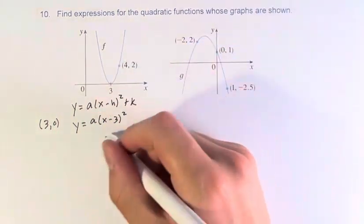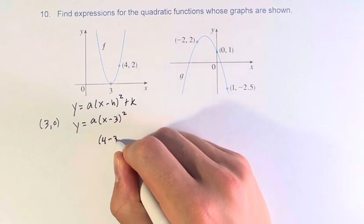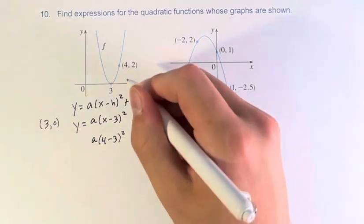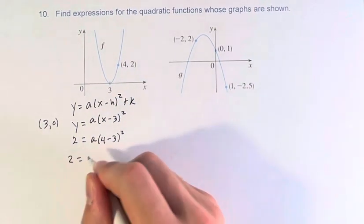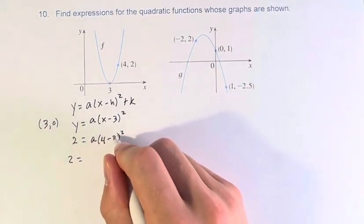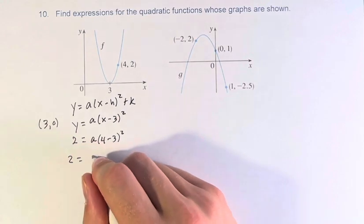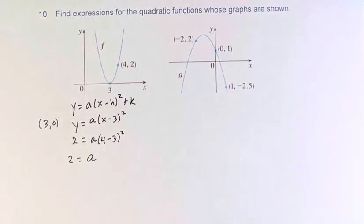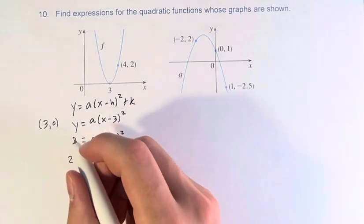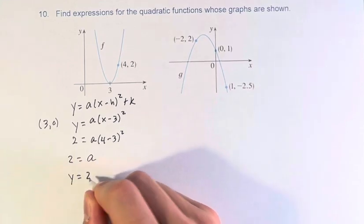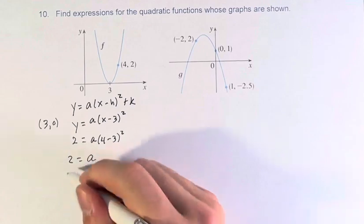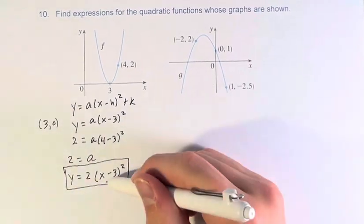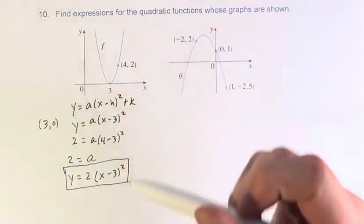So x is equal to 4. So (4 minus 3) squared times a is equal to y, which is 2. 2 is equal to a times (4 minus 3 is 1) squared, which is just 1, so a equals 2. So now we know y is equal to 2 times (x minus 3) squared. This is the function that corresponds with this graph.